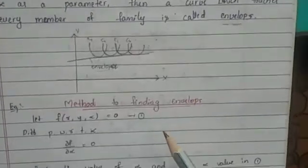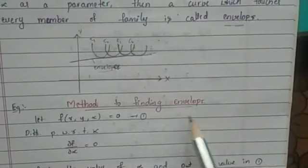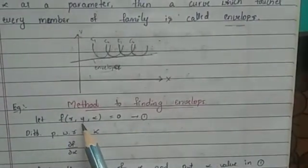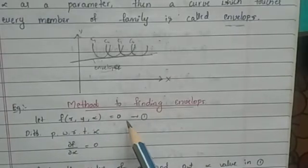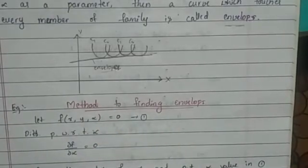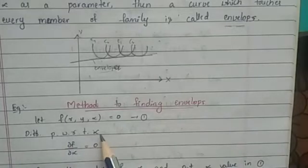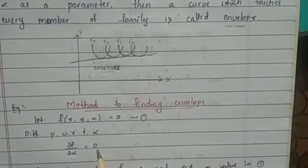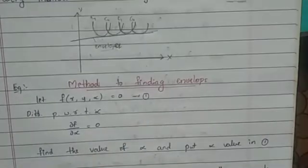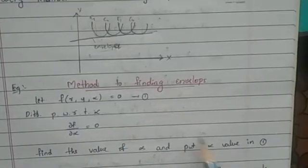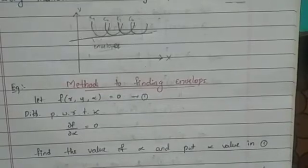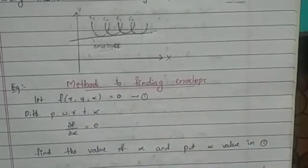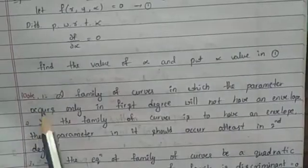Let me move on to the method for finding the envelope. The method is: let f(x, y, α) = 0 be the given equation of a curve. Differentiate partially with respect to α to get df/dα = 0. Then find the value of α and substitute it back into the given equation of the curve.